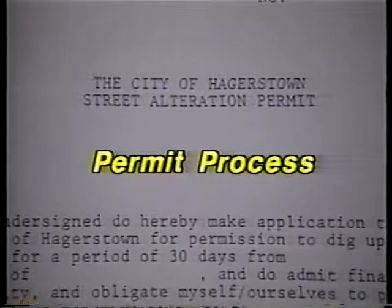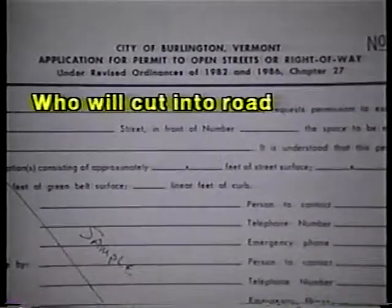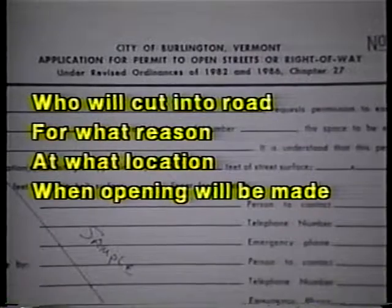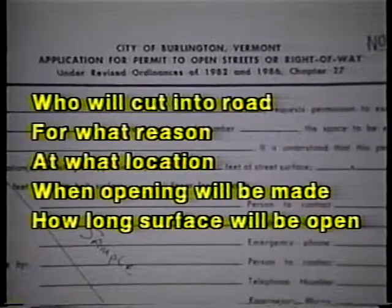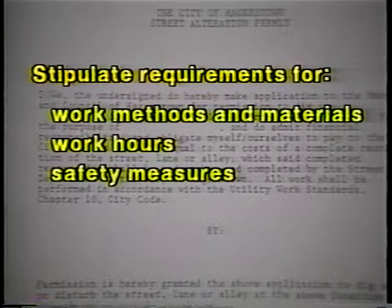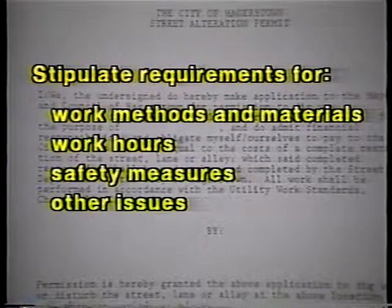First, a permit process makes it clear who is in charge of the local roads and streets. Permit information tells an agency who will cut into a road or street, for what reason, at what location, when the opening will be made, and how long the surface will be open. The permit form itself may be simple or comprehensive, depending on the agency's structure. Permits may stipulate requirements for work methods and materials, work hours, safety measures, and other issues. They bind the utility to comply with conditions that the agency deems important.